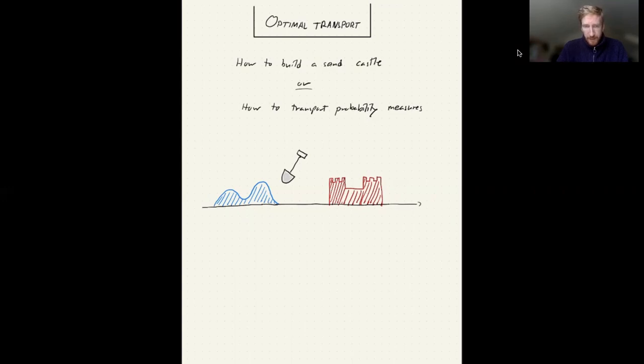So I've written down two sentences here, describing what optimal transport is. On the one hand, it's how to build a sandcastle. Put differently, it is how to transport probability measures.